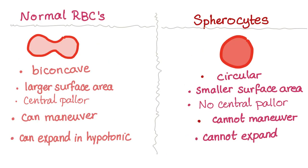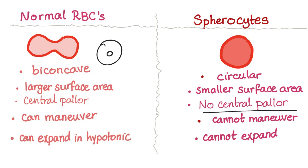What's the difference between a normal red blood cell and a spherocyte? The normal red blood cell is bi-concave; the spherocyte is circular. The normal cell has a larger surface area because of the folds of the bi-concave shape, while the spherocyte has a smaller surface area because it's a condensed circle. The normal cell has central pallor; the spherocyte has no central pallor.